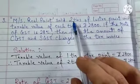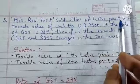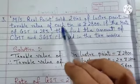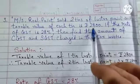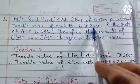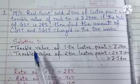Now, here they have given you the 2 tins of Luster Paint, but the taxable value of 1 is given. Each tin is Rs. 2800. Let's see the solution.